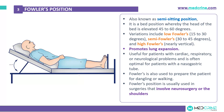The semi-Fowler's position has a head elevation of 30 to 45 degrees, and the high Fowler's position is a nearly vertical position. Fowler's position promotes lung expansion and is therefore useful in patients with cardiac, respiratory, and neurological problems. It is often optimal for patients who have a nasogastric tube for feeding, and is also used to prepare the patient for dangling or walking. It is usually used in surgeries involving neurosurgical cases or the shoulders.